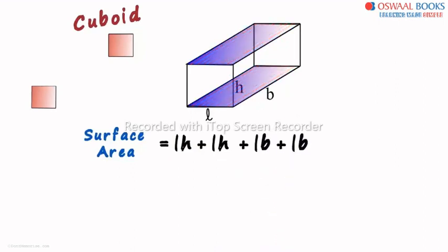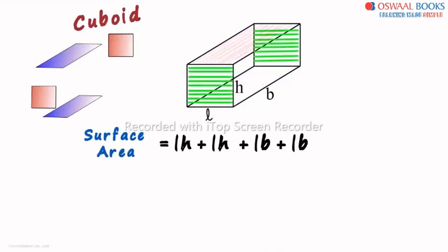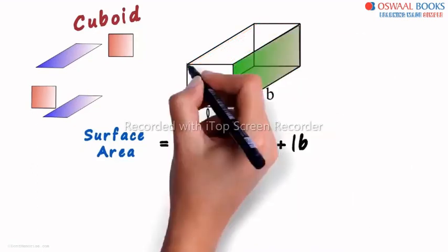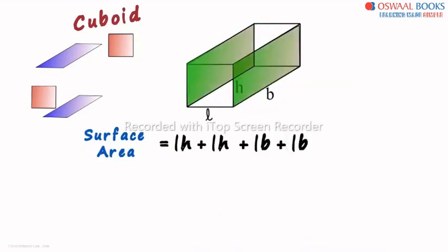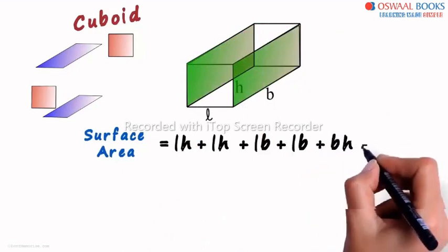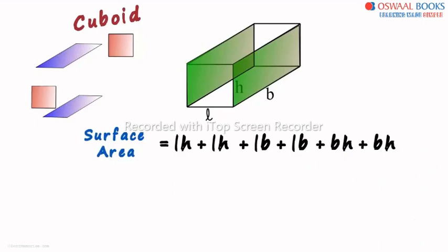Now let us take these two to the side. We have covered front and back, top and bottom. What remains is the side faces. The sum of the areas of the rectangles at the sides will be BH plus BH. Area of each rectangle is base multiplied by height.